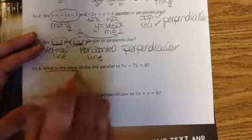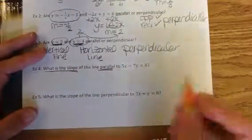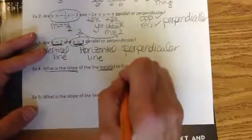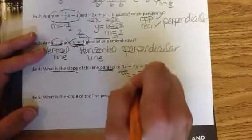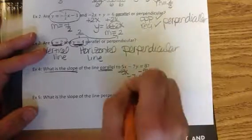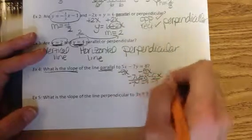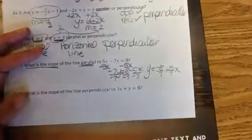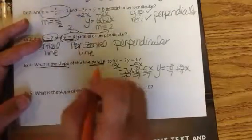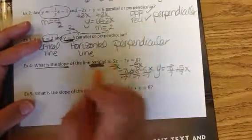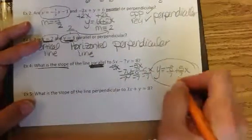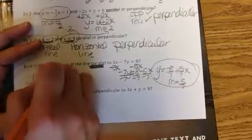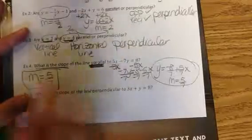Question number 4: what is the slope of the line parallel to 5x minus 7y equals 8? To find the slope of the parallel line, we need the slope of this one. Subtract 5x and divide by negative 7. We get y equals negative 8 sevenths plus 5 sevenths x. Parallel means the same slope, so this one has a slope of 5 sevenths, and the parallel line also has a slope of 5 sevenths.